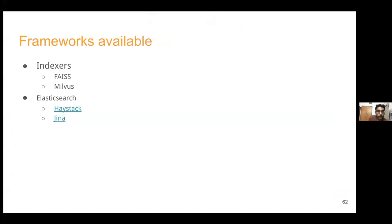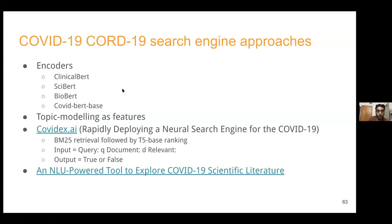A shoutout to some good open source frameworks: FAISS and Milvus are both awesome. For full-fledged frameworks, it's either Elasticsearch, or two newer things that have come up: Haystack and Gina - both have a lot of functionality. I haven't tried them myself since we started the project long back with custom requirements, but if you're starting new, definitely check them out. I also committed to covering COVID-19 related search engines. People are either training new models on COVID-specific data - starting with BioBERT since it's a very different data domain.